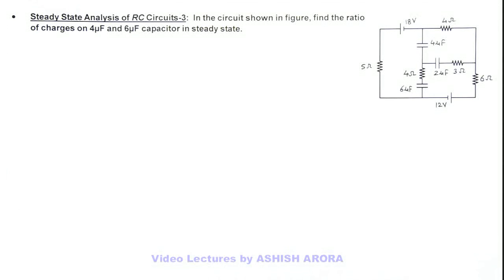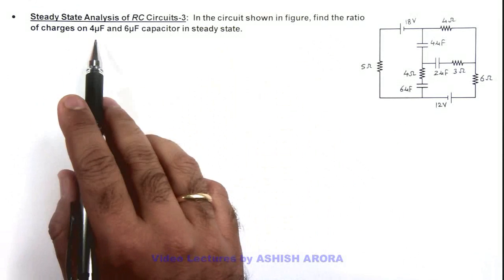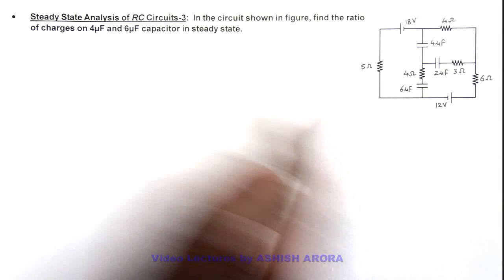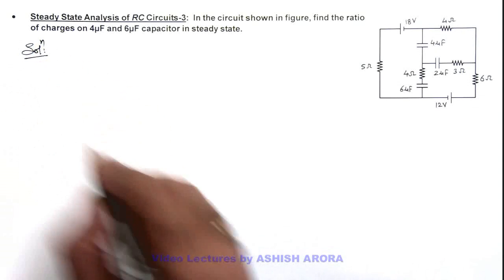Let us analyze another RC circuit in steady state. Here we are required to find the ratio of charges on 4 microfarad and 6 microfarad capacitor in steady state. Here we know in steady state no current flows through any capacitor.